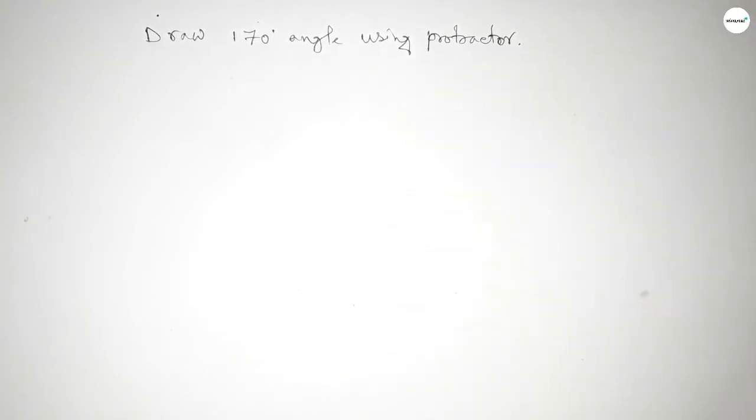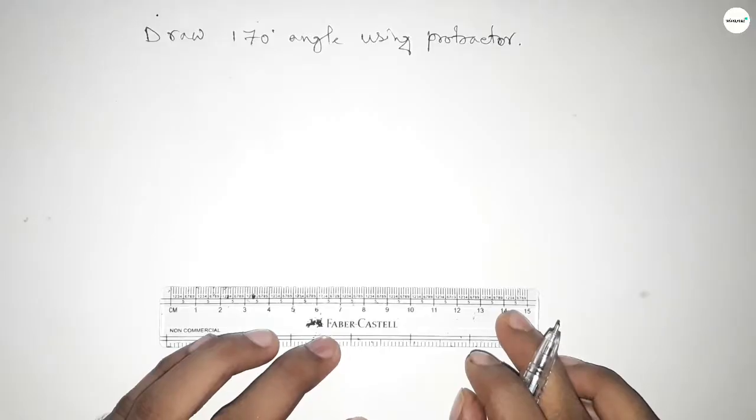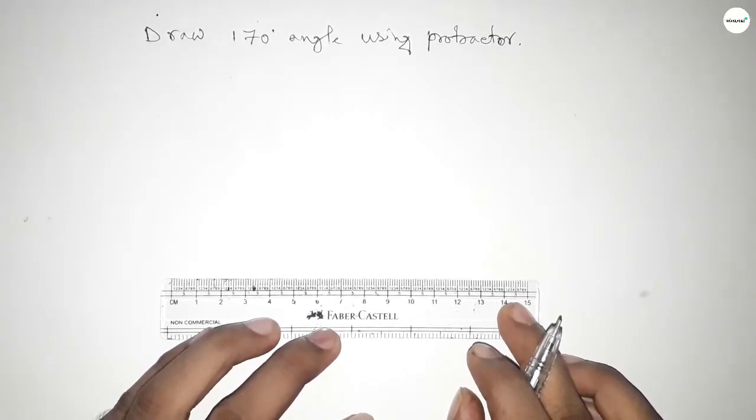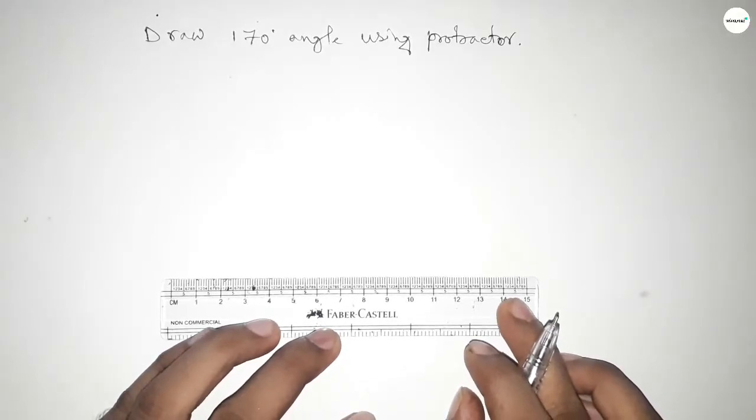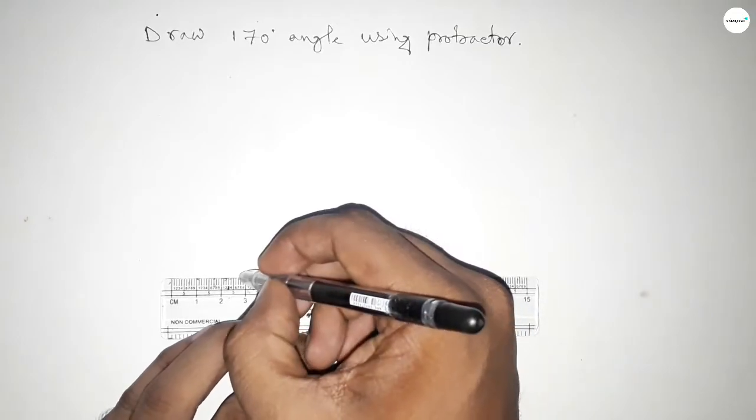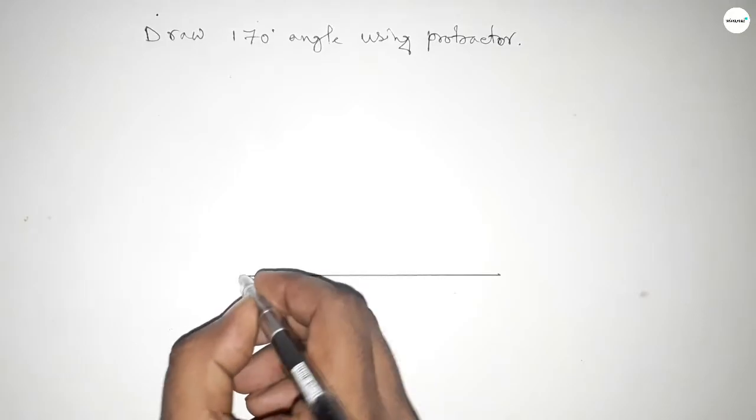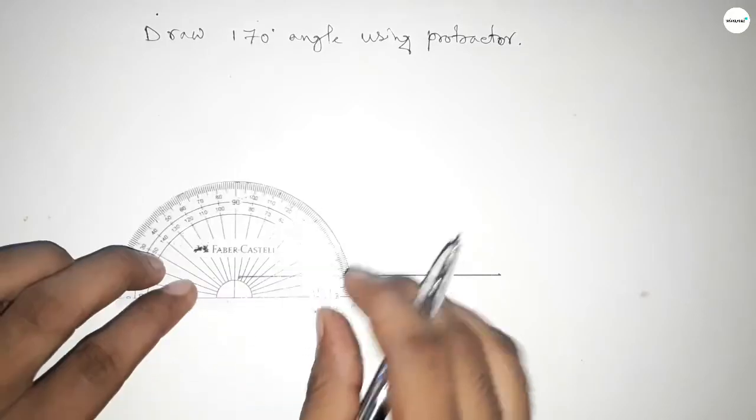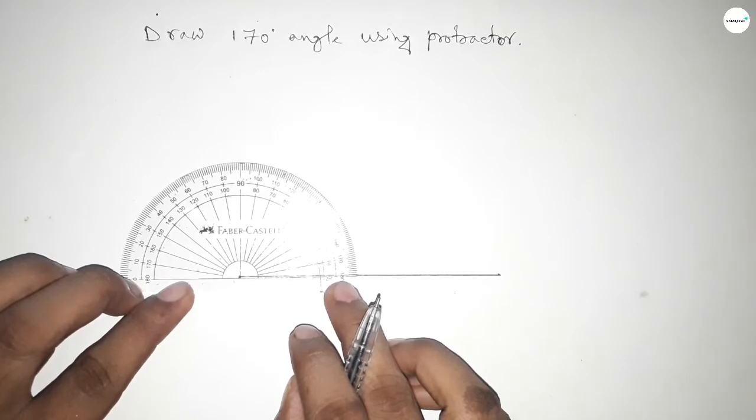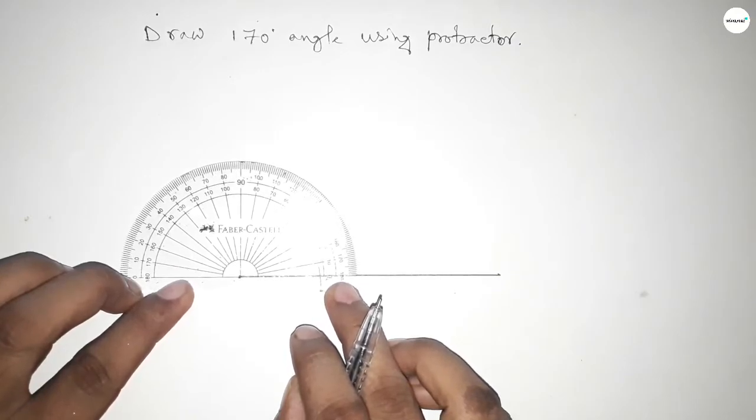So let's start the video. First of all, we have to draw a line of any length. Drawing here a line. Next, pointing here to draw 170 degrees. Now putting the protractor on the line perfectly to count the angles.